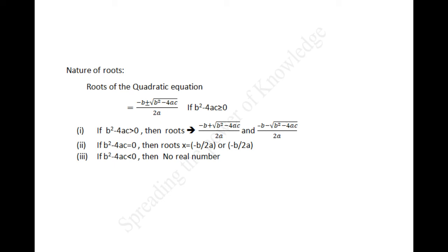If B squared minus 4ac is less than 0, then there is no real number whose square is B squared minus 4ac. Therefore, there are no real roots for the given quadratic equation. In summary: a quadratic equation ax squared plus Bx plus C equal to 0 has two distinct real roots if B squared minus 4ac is greater than 0, two equal real roots if B squared minus 4ac equals 0, and no real roots if B squared minus 4ac is less than 0.